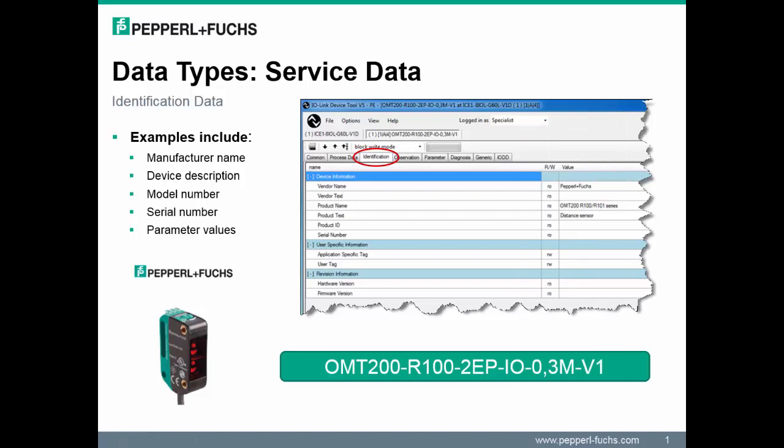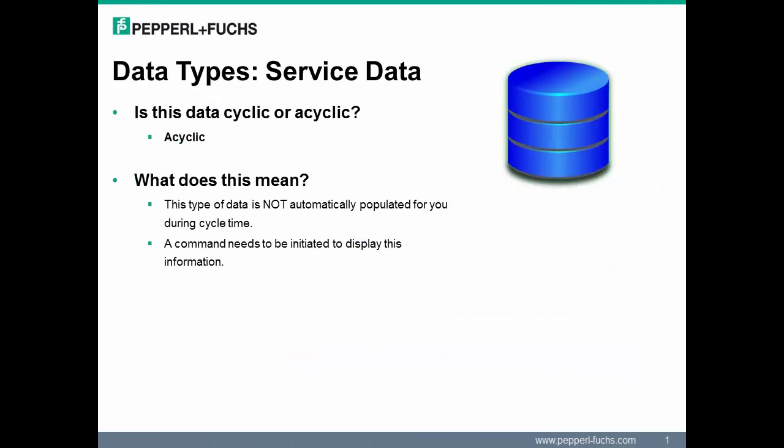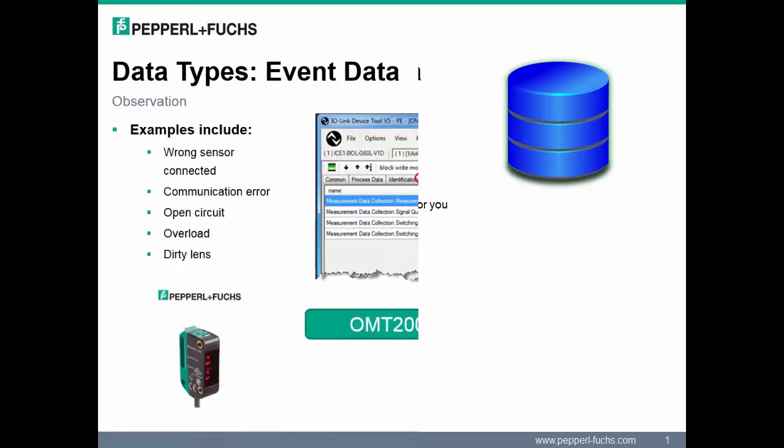Now let's move on to discussing the second type of data. Service data displays device attributes and parameters used to identify, display, or reconfigure a sensor. This slide takes a closer look at the service data of an R100 sensor connected to port 1. Service data differs from process data in that this data is acyclic — the data is not automatically populated on a cycle time. A command must be initiated in order to display this information in the PLC.